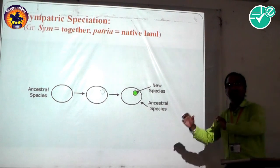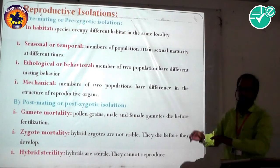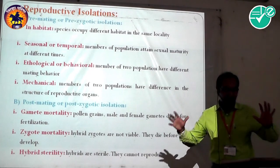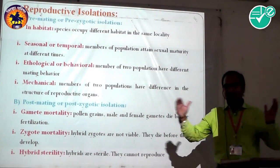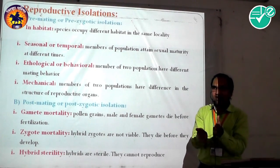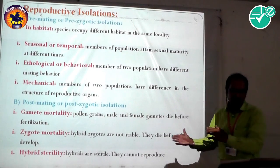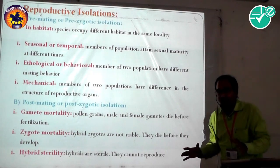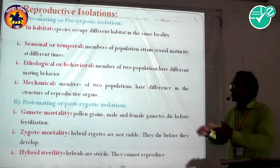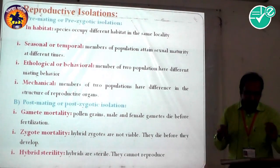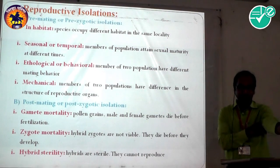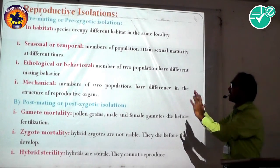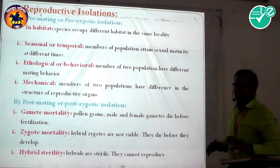Sympatric speciation is carried out due to reproductive isolation. Each organism has a different mode and type of reproduction. When organisms are separated from each other on the basis of their habit, nature, and technique of reproduction, that is called reproductive isolation. This reproductive isolation creates barriers in the interbreeding of a population. Reproductive isolation was contributed by Mayr, who contributed his work to the modern synthetic theory. Reproductive isolations are of two types.